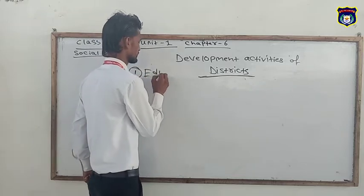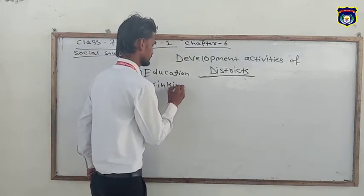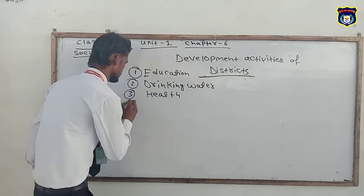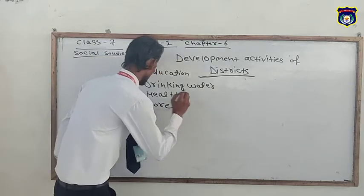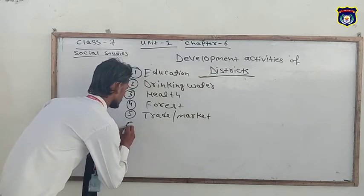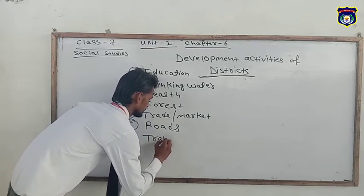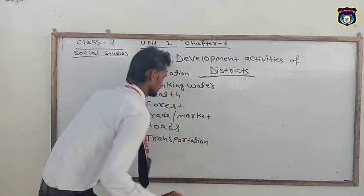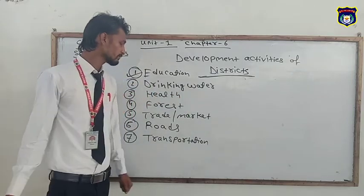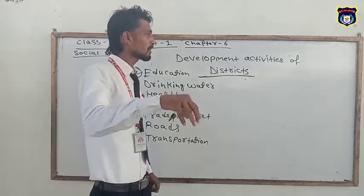The first one is education. The second one is drinking water. The areas are: education, drinking water, health, forest, trade, market, roads, and transportation. Today we will discuss about these areas in which districts have to work to develop.